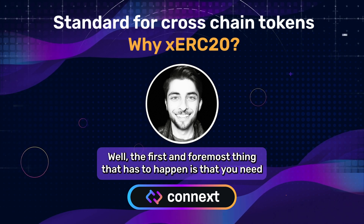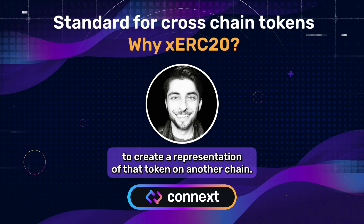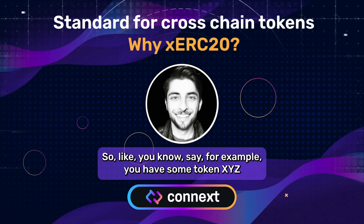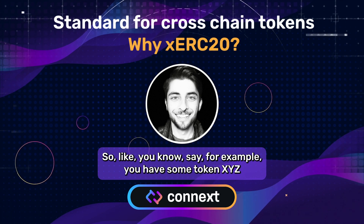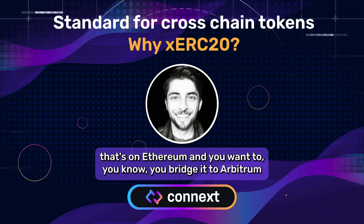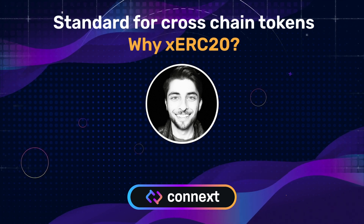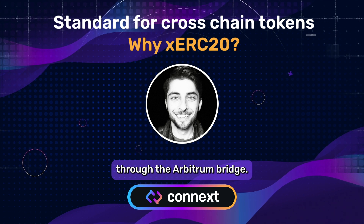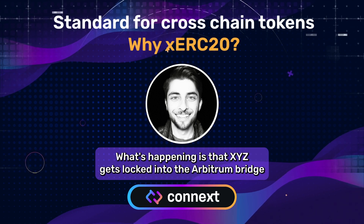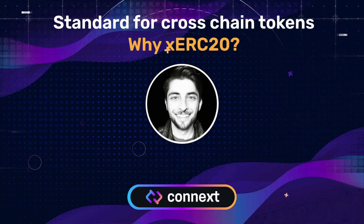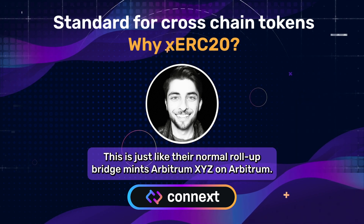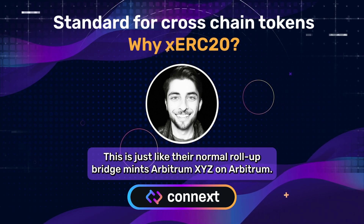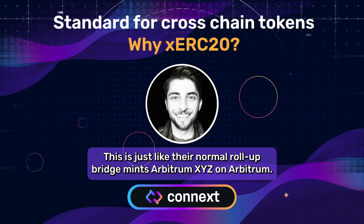Well, the first and foremost thing that has to happen is that you need to create a representation of that token on another chain. Say, for example, you have some token XYZ that's on Ethereum and you want to bridge it to Arbitrum through the Arbitrum bridge. What's happening is that XYZ gets locked into the Arbitrum bridge, and then the Arbitrum bridge — this is just like their normal rollup bridge — mints Arbitrum XYZ on Arbitrum.